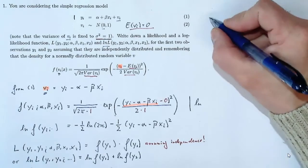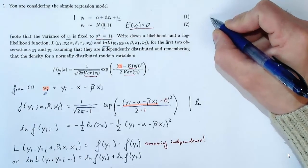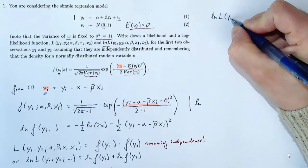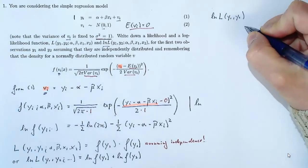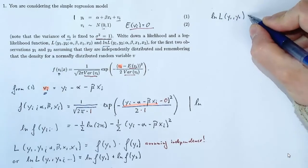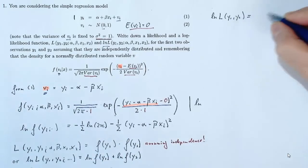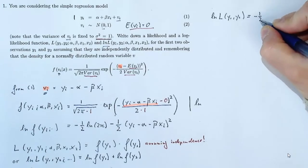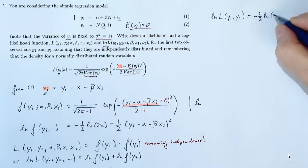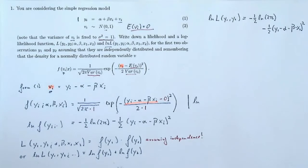The log likelihood is the sum of the two log densities, the log density for y1 and the log density for y2. Let's continue working on the right hand side. We shall now substitute what we know about the log densities. First, we'll have the log density for y1: that's negative 1 half ln 2 pi minus 1 half times y1 minus alpha minus beta times x1 squared.